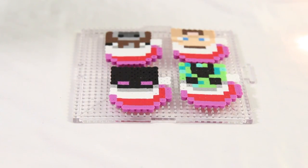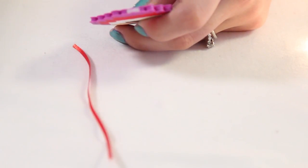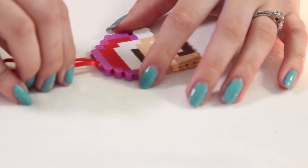Flip them over and repeat that step and melt both sides. Once it's completely dry, add some glue and add on your ribbon to create the ornament.